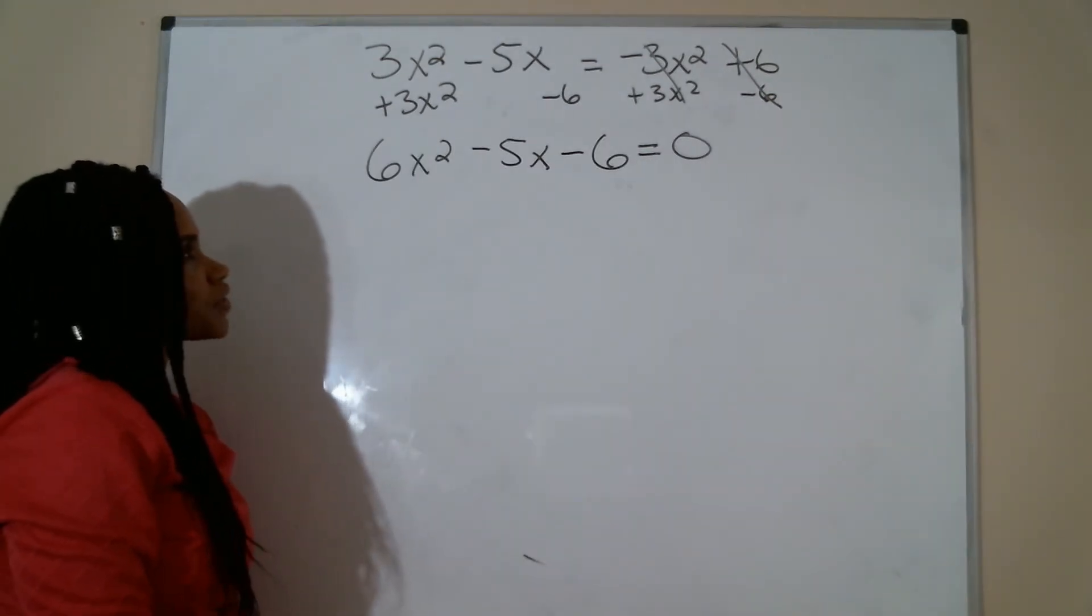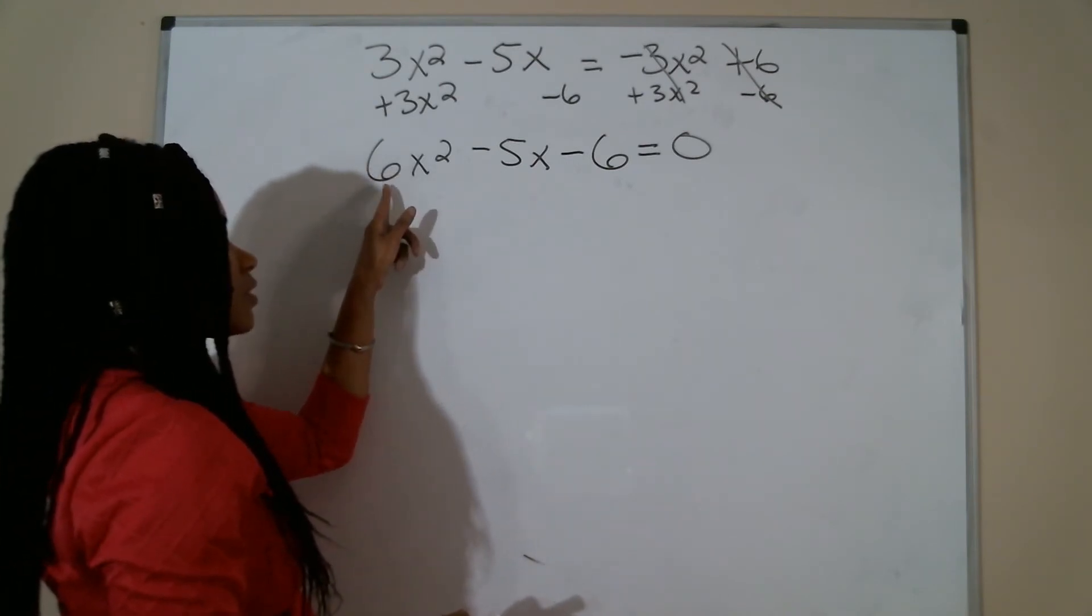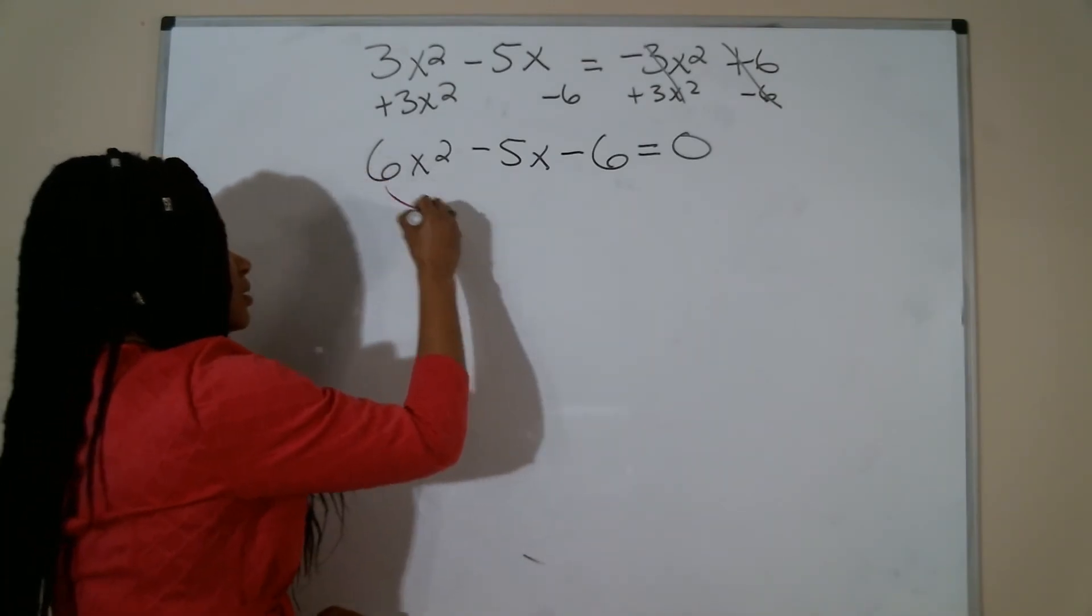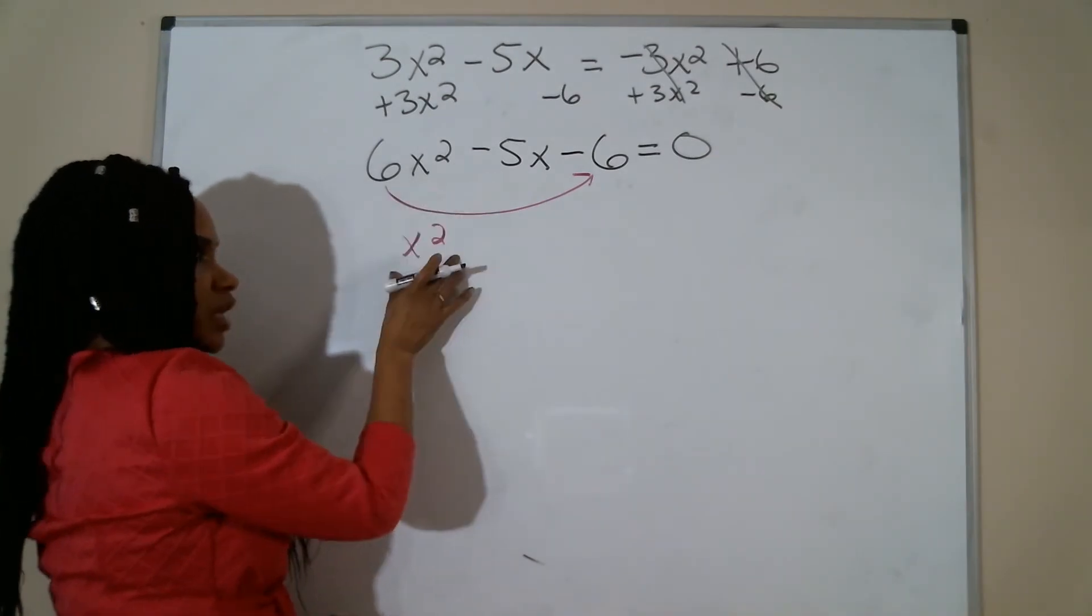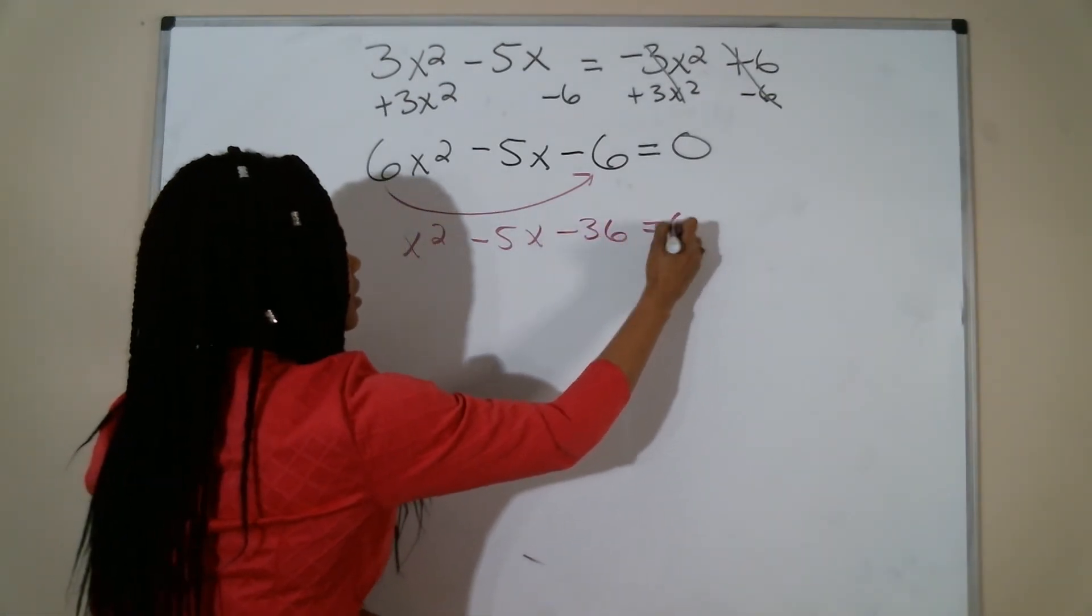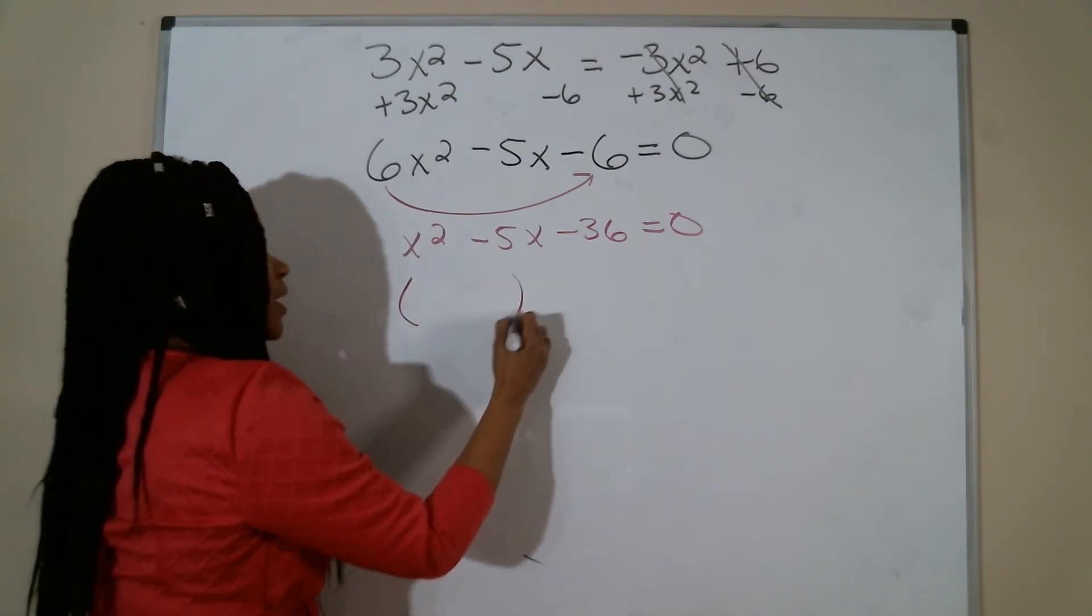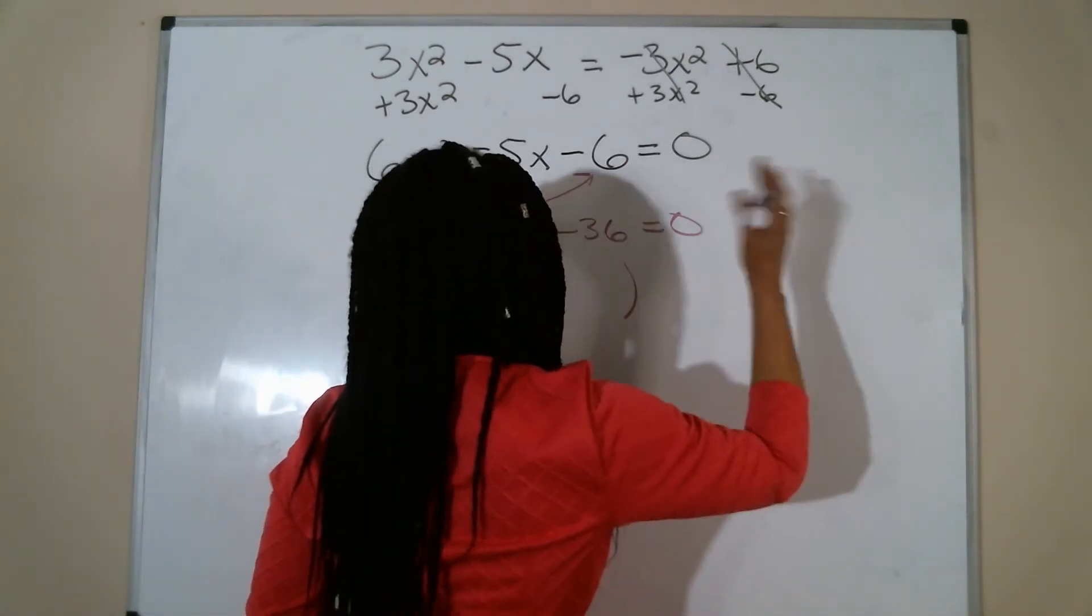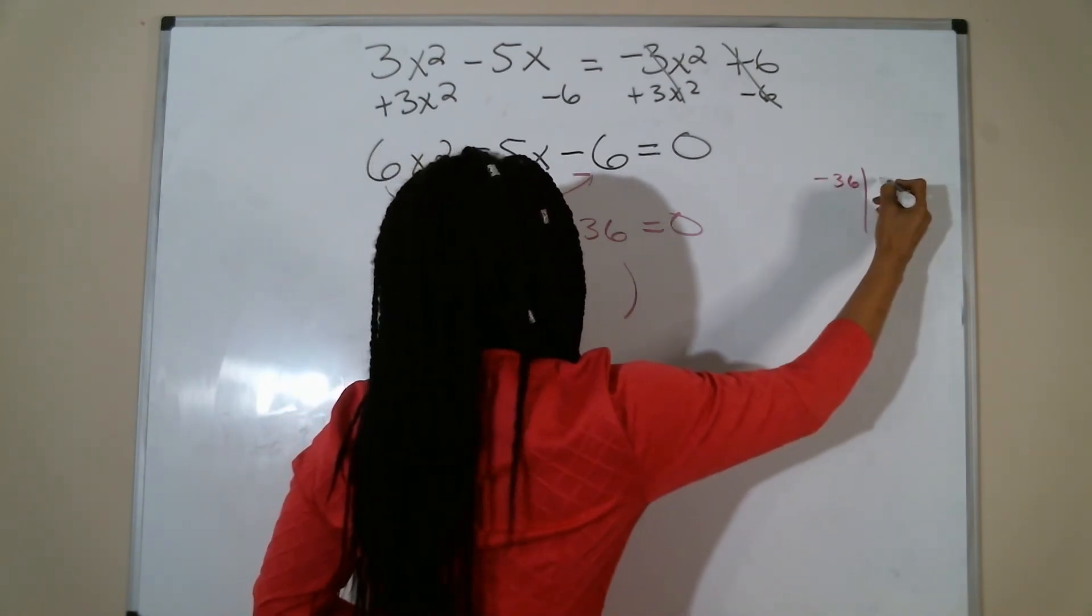So the first thing I want to do is slip this first coefficient to the end. Slip my first term to the last and multiply that. That's going to be x squared minus 5x. 6 times negative 6 is negative 36. Now I want to factor this. So factors of negative 36 that equal negative 5. I'm just doing a t-chart to show you how to get the factors.